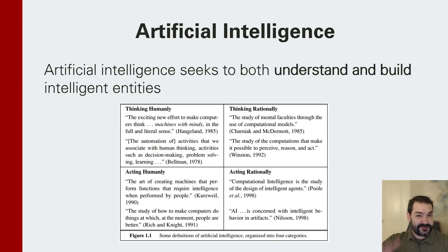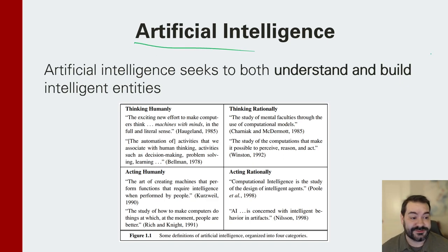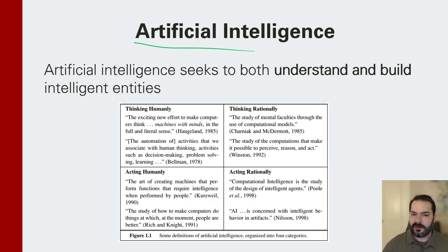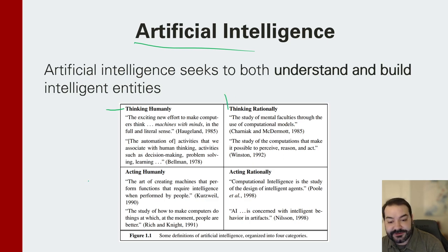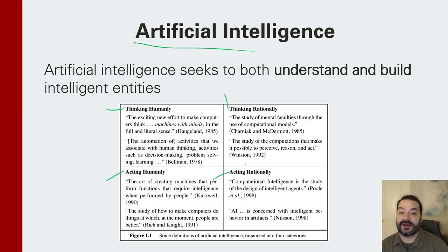With our history of intelligence and what it means out of the way, that finally gets us to our idea of artificial intelligence. What does it mean for something to be artificially intelligent? Your textbook breaks it down into four separate categories: thinking humanly, thinking rationally, acting humanly, and acting rationally.